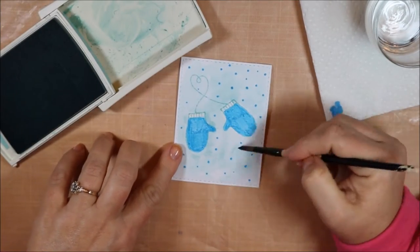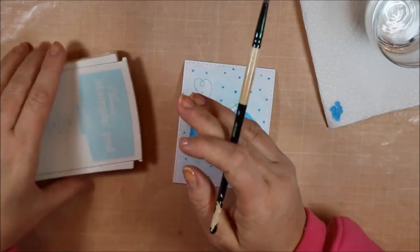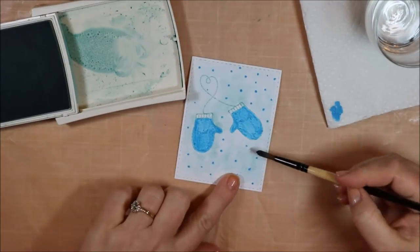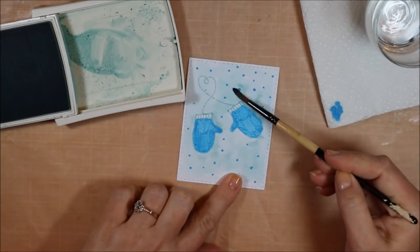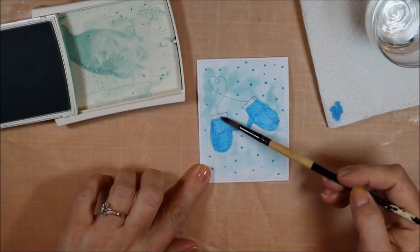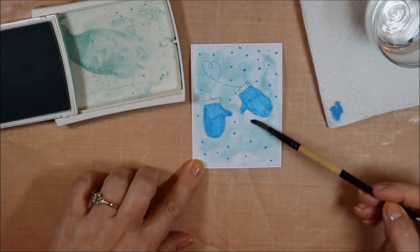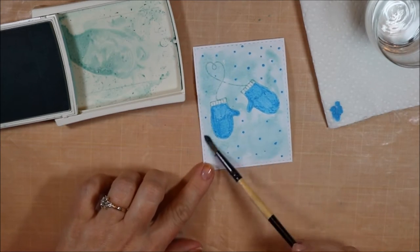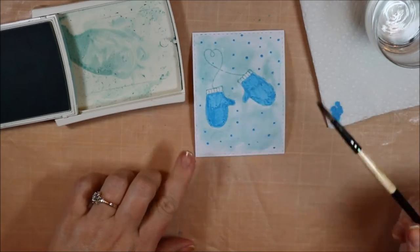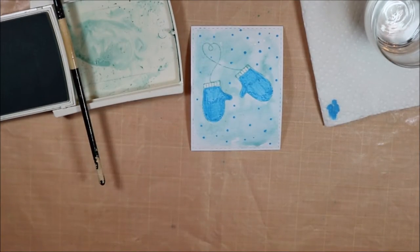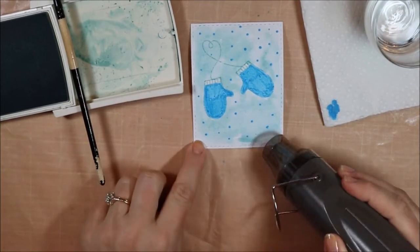So what you saw is I'm just adding color all over. I'm kind of being random. I want it to look not like one solid color. I want it to have just some different shades in the background so that it does look a little bit like a sky or a snowy background. I don't know how to explain it, but I did want it lighter in that bottom right corner where I'm going to add my sentiment. So I didn't add quite as much there.